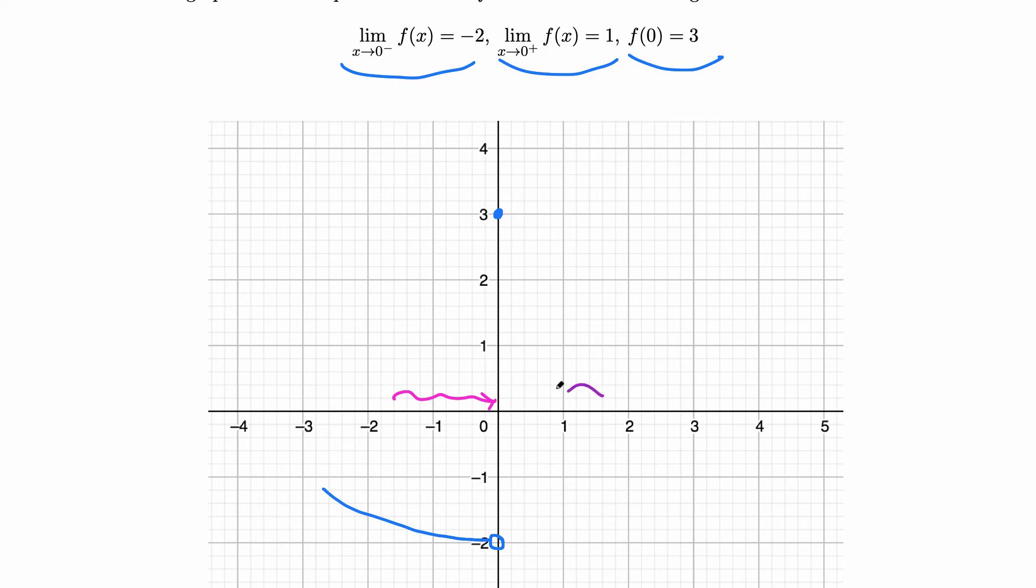When x goes to 0 from the right side, the function approaches 1. So that's here from the right side. There are no other conditions, so we can just draw something like this. This is one of many correct answers.